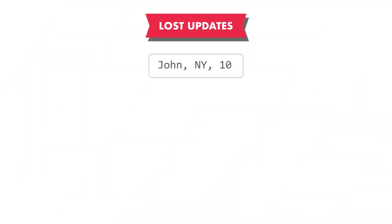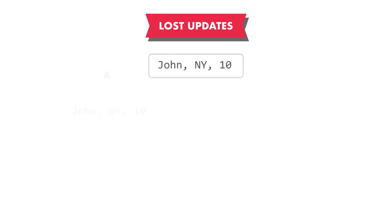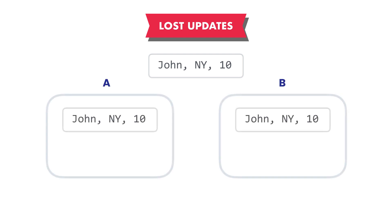For example, let's say that we have two transactions that try to update the same customer. One tries to increase the points, the other tries to update the state for this customer. Here's our customer record — John, in New York with 10 points. Now we have two transactions: transaction A that tries to update the state of this customer, and transaction B that tries to update the points for this customer. These two transactions occur at the same time.